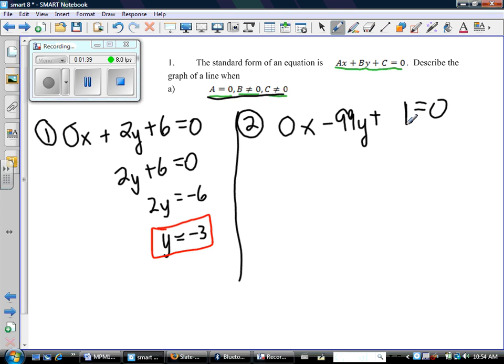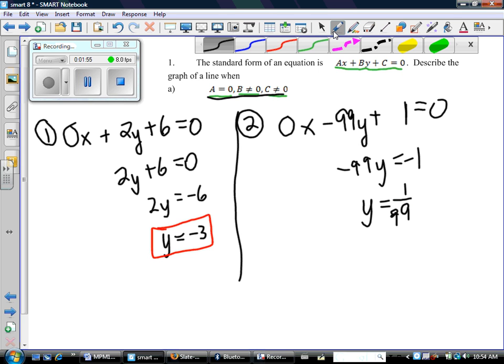And again, this is certainly something I can simplify, so we'd end up with y = 1/99, whatever that is. So there's two equations, both of them following the parameters that were set out in the question.